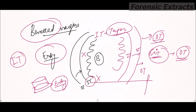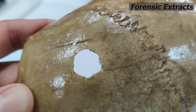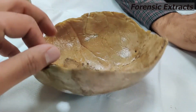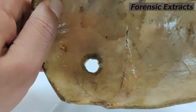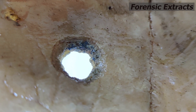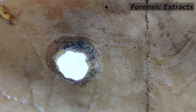Beveling is seen in firearm entry as well as exit wounds. In this video, you can see the outer table and, towards the inner side, the inner table. The inner table is having tapered margins — the margins of the inner table are tapered. So this is an entry wound because there is no support for the inner table.